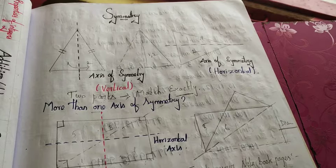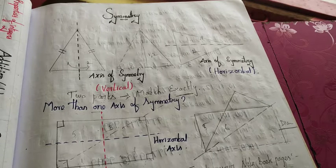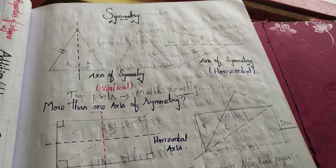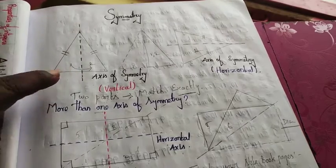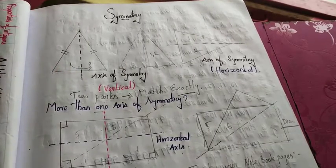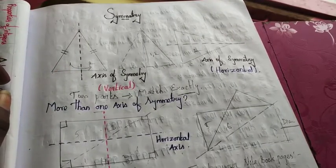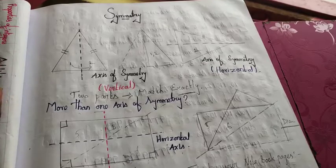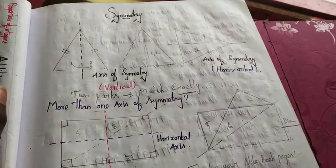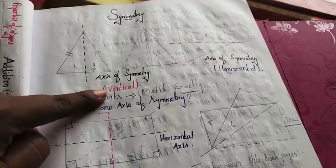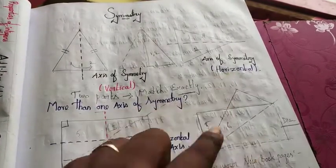The symmetry line is where one figure is cut equally. So when you cut the line equally, that line is called the axis of symmetry. In the symmetry line, two types of lines are very important: the first one is vertical and the second one is horizontal.